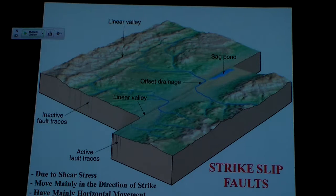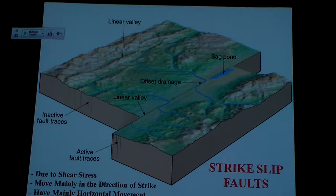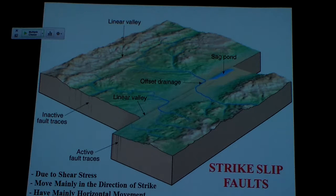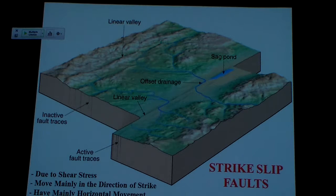Because the fault zone's busted up rock, it's easy to erode — it's the point where we need to connect the river. So we just see as this thing keeps sliding along, the river keeps growing right along the fault zone to stay connected from one block to the other. So these stream offsets are something to look for.